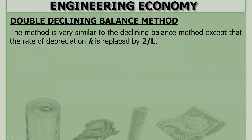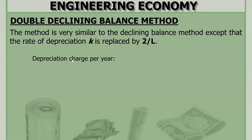This method is very similar to the declining balance method, except that the rate of depreciation K is replaced by 2 over L. This is the only difference from the declining balance method. When you want to compute for the depreciation charge per year, you can use the formula for the declining balance method but replace K by 2 over L.